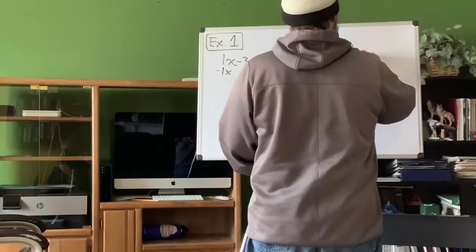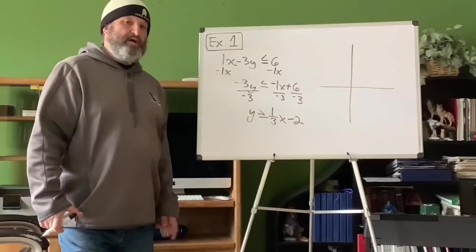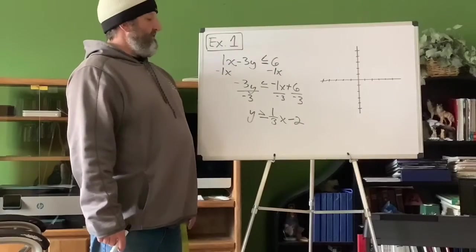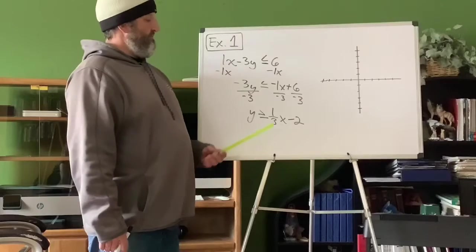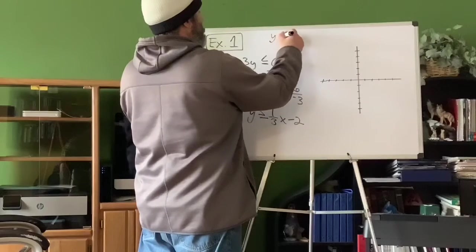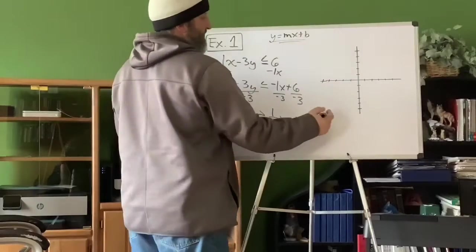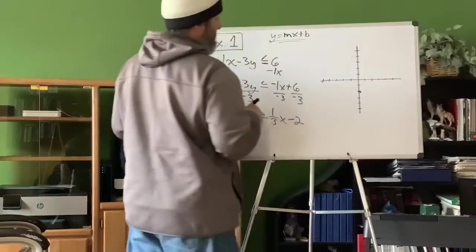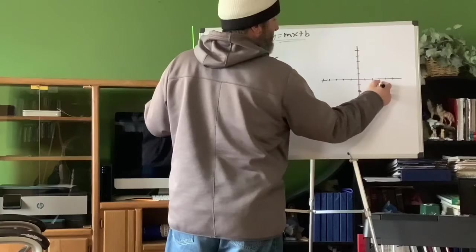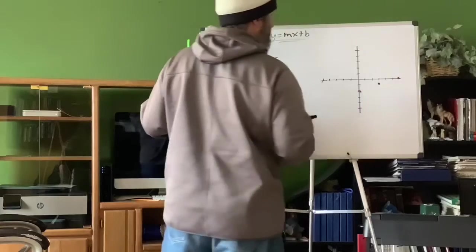I'm going to make a graph. We're going to graph this just like we would any equation — y equals mx plus b. b is our beginning: negative 2. Then slope: up 1, over 3. Up 1, over 3. Up 1, over 3. All of that should look familiar.